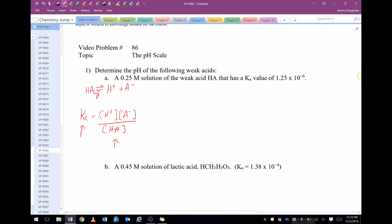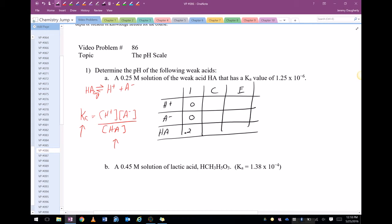So that means we have to use an ICE table. Let me go ahead and introduce you here to the ICE table. We're going to put in H plus, A minus, and HA. The initial concentration of H plus is 0, A minus is 0 because we don't start out with any, but HA is 0.25. So HA is going to go down by some amount X. A minus is going to go up by some amount X. H plus is going to go up by some amount X. So my equilibrium is X, X, and 0.25 minus X.